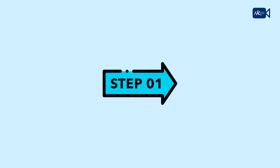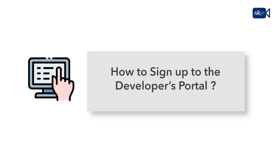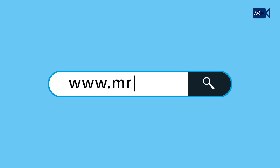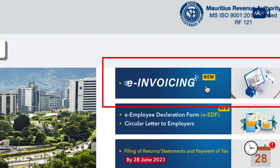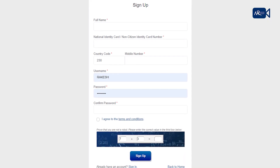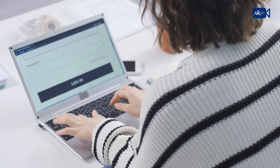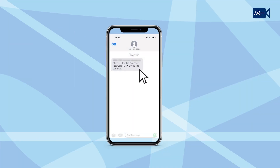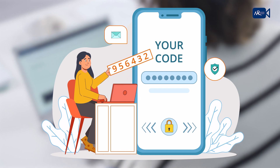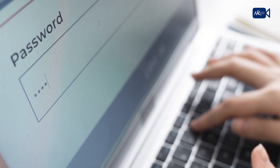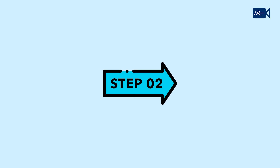Step 1: How to sign up to the developer's portal. First of all, access the developer's portal on the MRA website at www.mra.mu. To sign up, insert details as requested, including your username and password. A one-time password (OTP) will be sent to your mobile phone. Insert the OTP on the sign-up page to confirm registration.